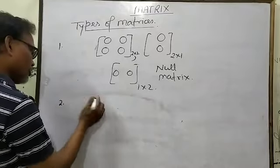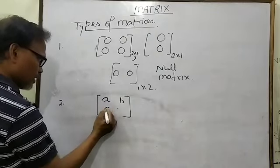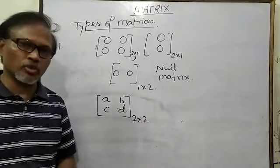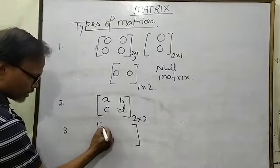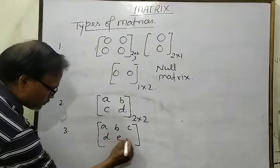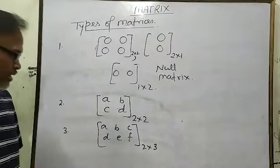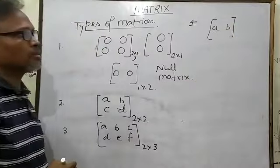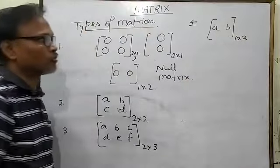The second type is the square matrix. When the number of rows and number of columns are equal, then the matrix is known as the square matrix. Third is the rectangle matrix — when we have different numbers of rows and columns, such as two rows and three columns, or three rows and two columns, this is called the rectangle matrix. Fourth is the row matrix — when there is only one row, it is called the row matrix. The columns may be two, but the row is one.